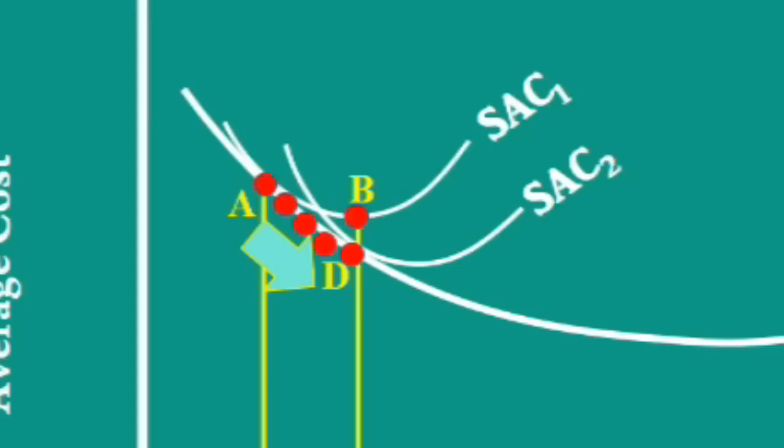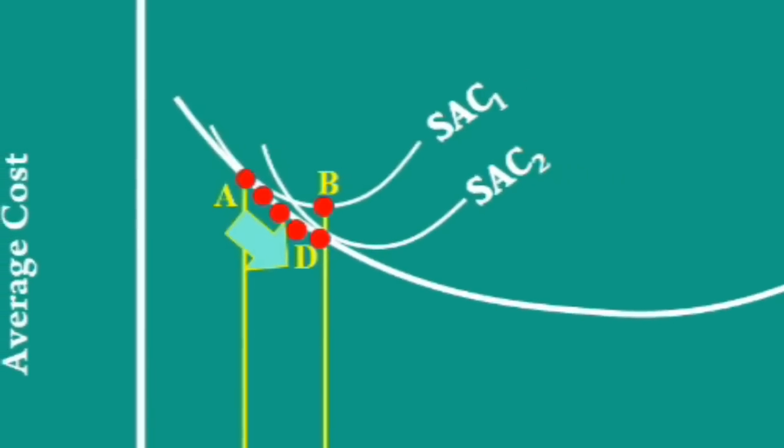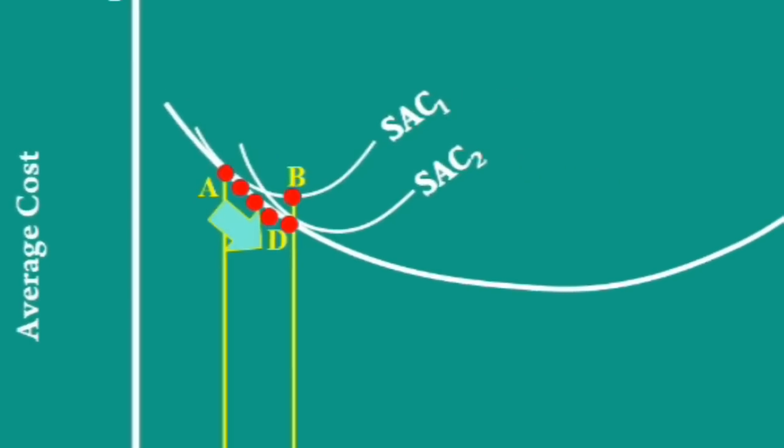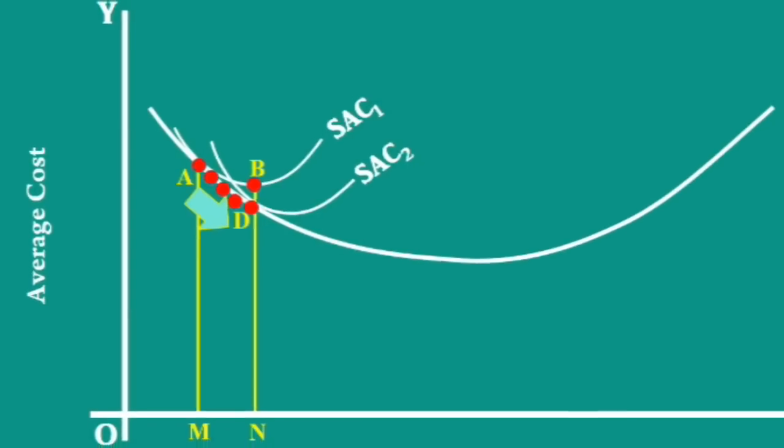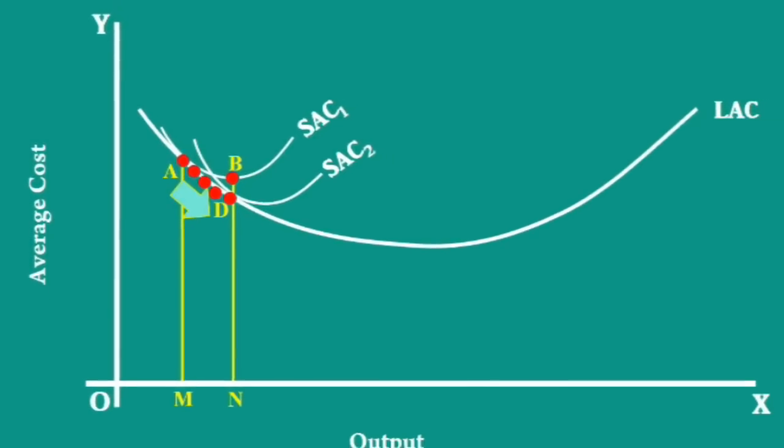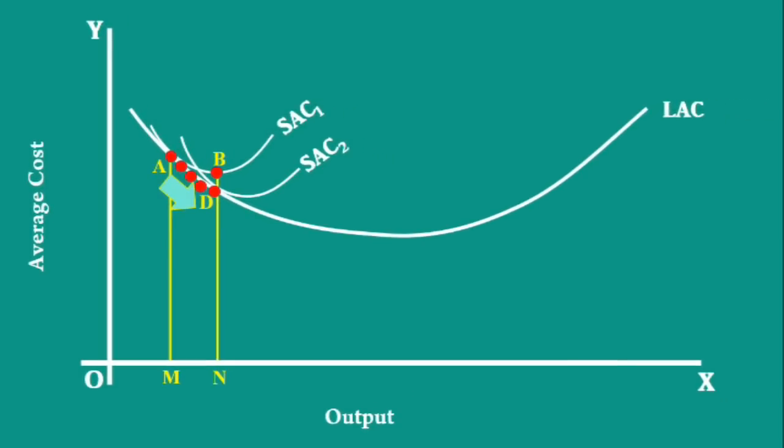Moreover, there are a number of plant curves in between A and D. The firm has to consider all these alternatives. That is the reason why the firm slides down along the long run average cost curve.